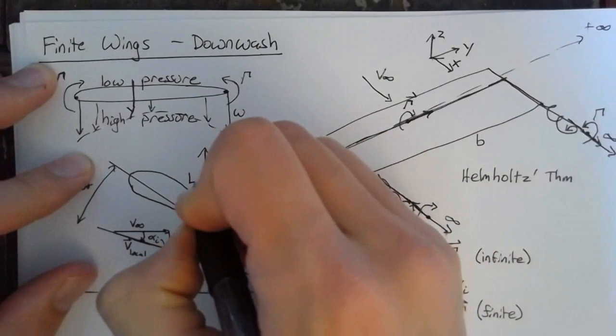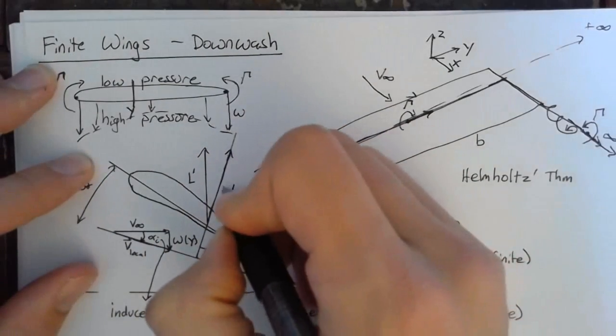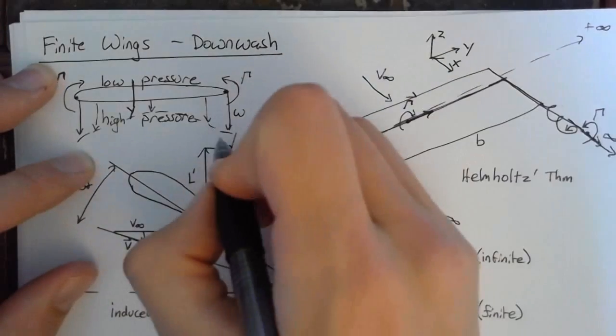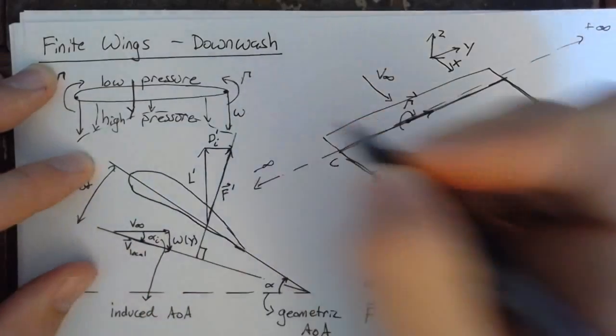So this is our actual lift per unit span. This is the force seen per unit span. And what occurs here is that we actually get drag. And we're calling this the induced drag per unit span.